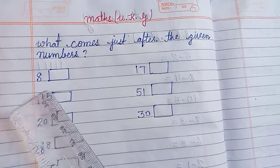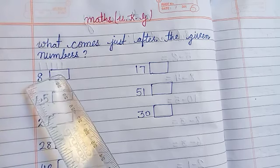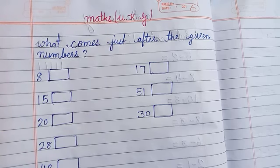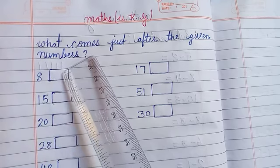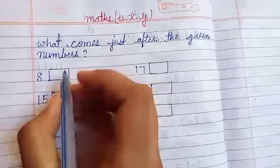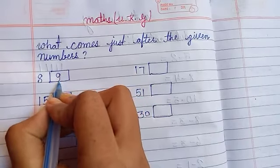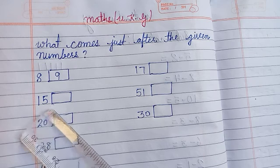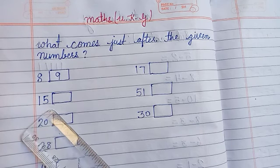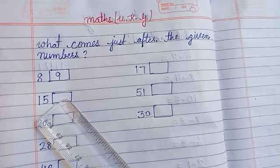After means badwale number. Here is 8. After 8 there will be 9. Here is 15. After 15 there will be 16.